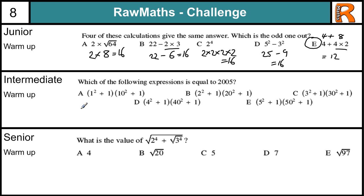In the intermediate warm-up, which of the following expressions is equal to 2,005? So if we just work them out. 1 squared plus 1 is 2. 10 squared is 100 plus 1 is 101. 2 lots of 101 is not 2,005.